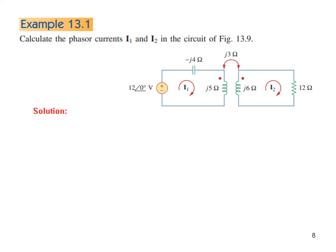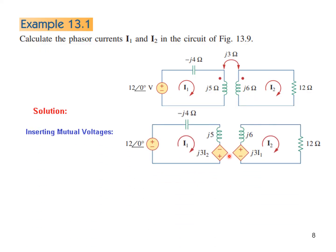For the example, we immediately incorporate the mutual voltage source with magnitude jωM = j3. Polarity: current entering the dot makes the upper terminal positive; current entering the non-dot makes the lower terminal positive. We then write the KVL equations for both loops.